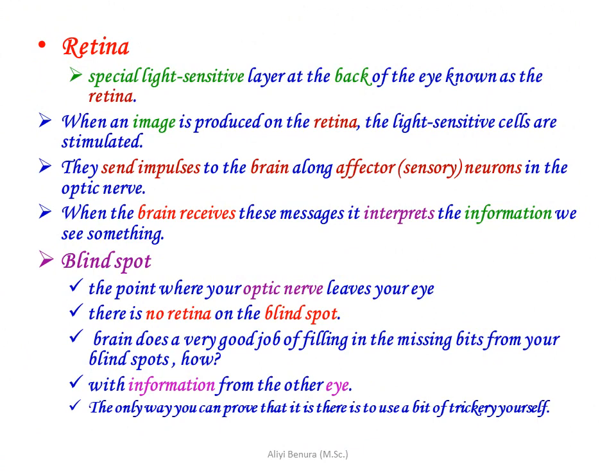The retina is a special light-sensitive layer at the back of the eye. When an image is produced on the retina, the light-sensitive cells are stimulated and they send impulses to the brain along sensory neurons in the optic nerve. When the brain receives this message, it interprets the information and we see something.